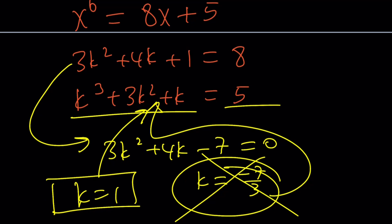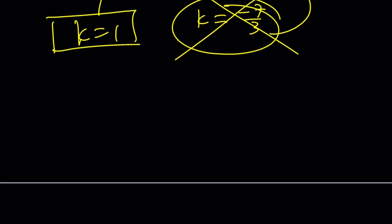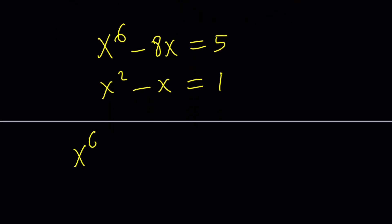What does all this mean? We were given x^6 - 8x = 5, and we found that x^2 - x = 1. This means that x^6 - 8x - 5 is divisible by x^2 - x - 1. You could do long division as another method to solve this problem. If there are any other solutions, please let me know.